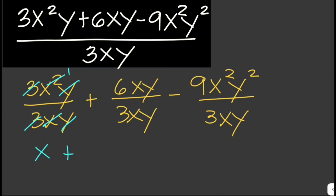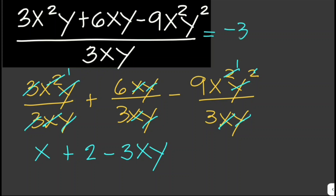Then for the next term, 6 divided by 3 is 2, and x and y cancel out. Then minus 9 divided by 3 is 3, and subtracting the exponents we are left with x and y. So the answer is negative 3xy plus x plus 2.